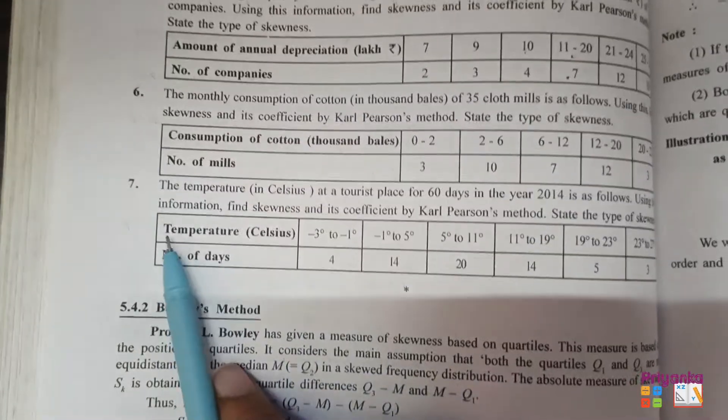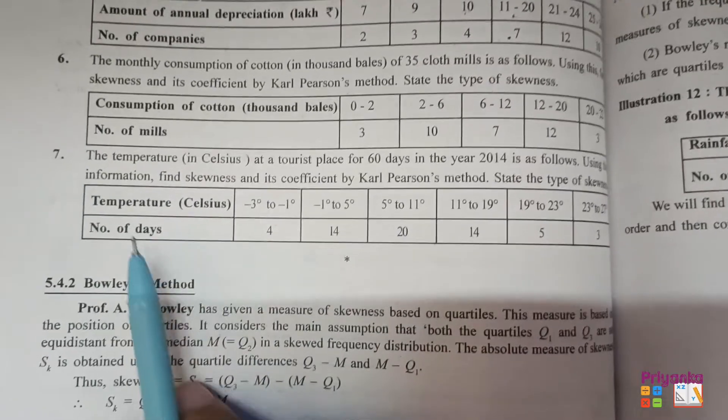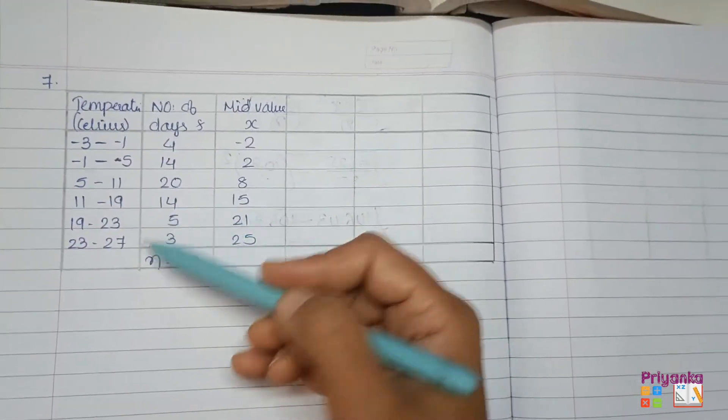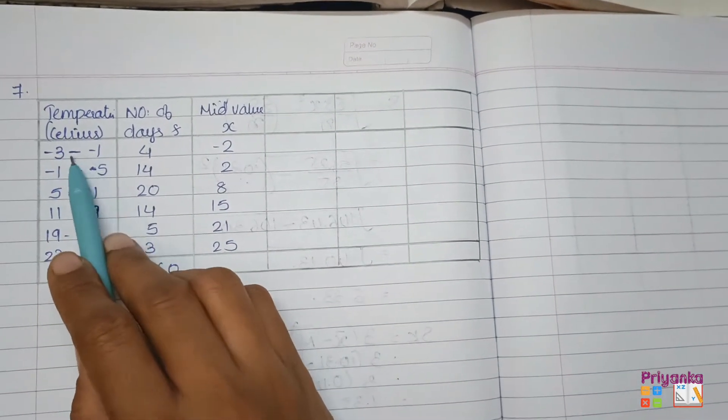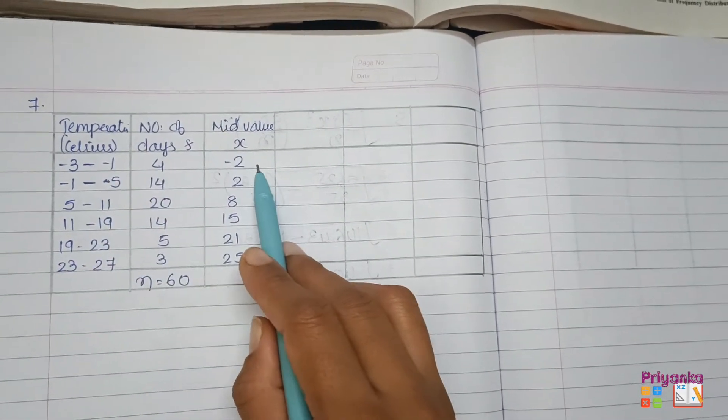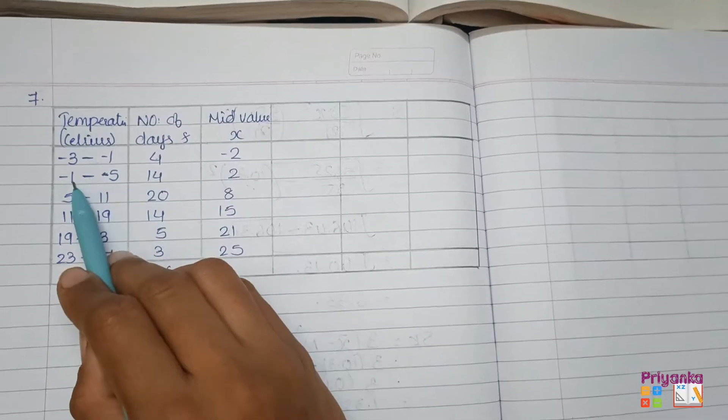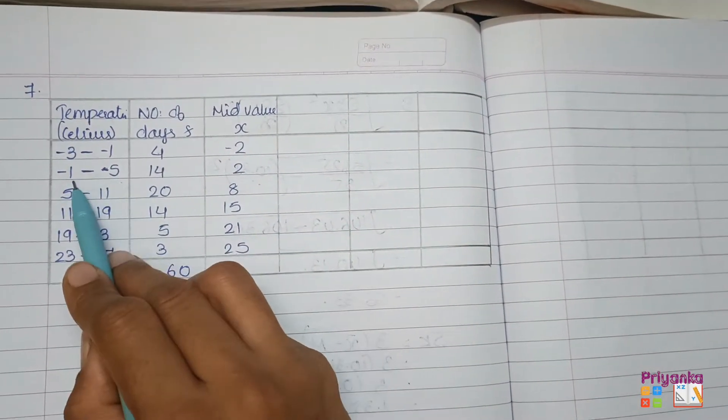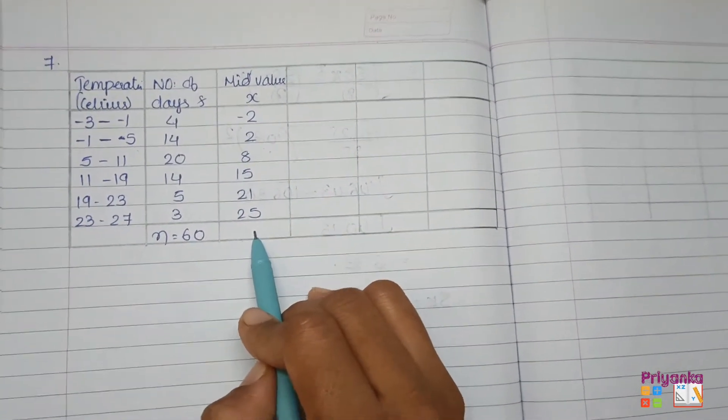The temperature in Celsius at a tourist place for 60 days in the year 2014 is as follows. Using this information, find the skewness and the coefficient of Karl Pearson method and state the types of skewness. Let's take all the information. As we can see, the observation is given with minus degree as well. Minus three plus one will be four, minus four divide by two, our mid value will be minus two. Minus one to five degrees, one plus five will be four divided by two will be positive two. Then continue with the remaining mid values.